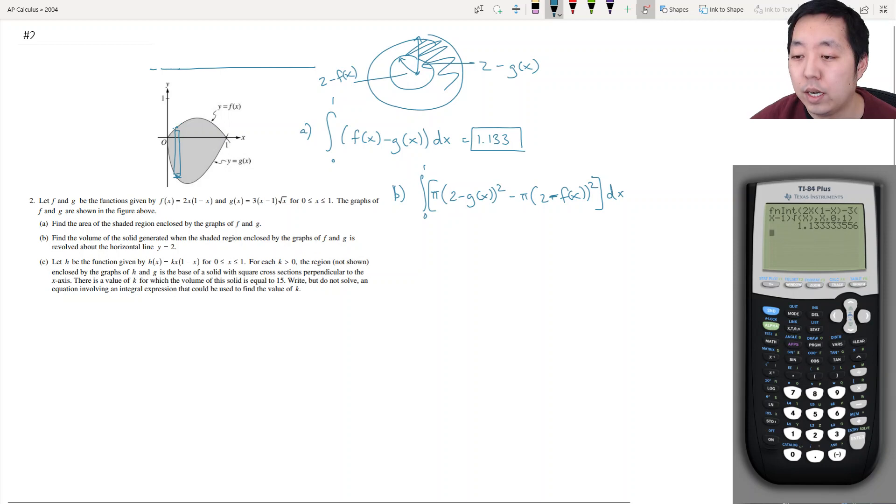Pi times the integral of [2 minus g which is 3(x minus 1)√x] squared minus [2 minus f of x which is 2x(1 minus x)] squared.